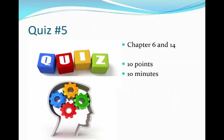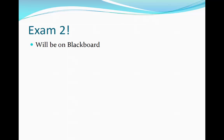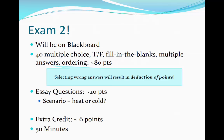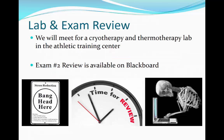Quiz number 5 will be available on Blackboard. It will cover Chapter 6 and 14 in the Starkey textbook, will be worth 10 points, and you will have 10 minutes to complete it. Exam 2 will be over superficial cryo and thermotherapy on Blackboard, with approximately 40 questions including multiple choice, true-false, fill-in-the-blank, multiple answers, and ordering questions worth about 80 points, plus some essay questions. Selecting the wrong answers will result in a deduction of points. The exam review is available on Blackboard.